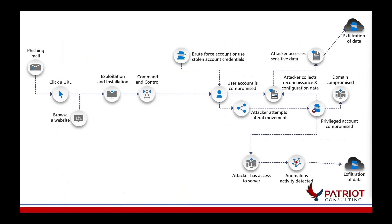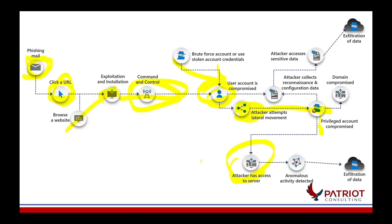Let's start with an example attack chain and some typical tactics. On the left, we have a phishing email that comes in. A user clicks on a URL they're not supposed to click on. They browse to a website that takes advantage of an exploit and then installs an attacker tool. That tool sets up command and control. From there, a user account might be compromised from brute force, the attacker attempts lateral movement across the network, and might get access to a server or even a domain controller.